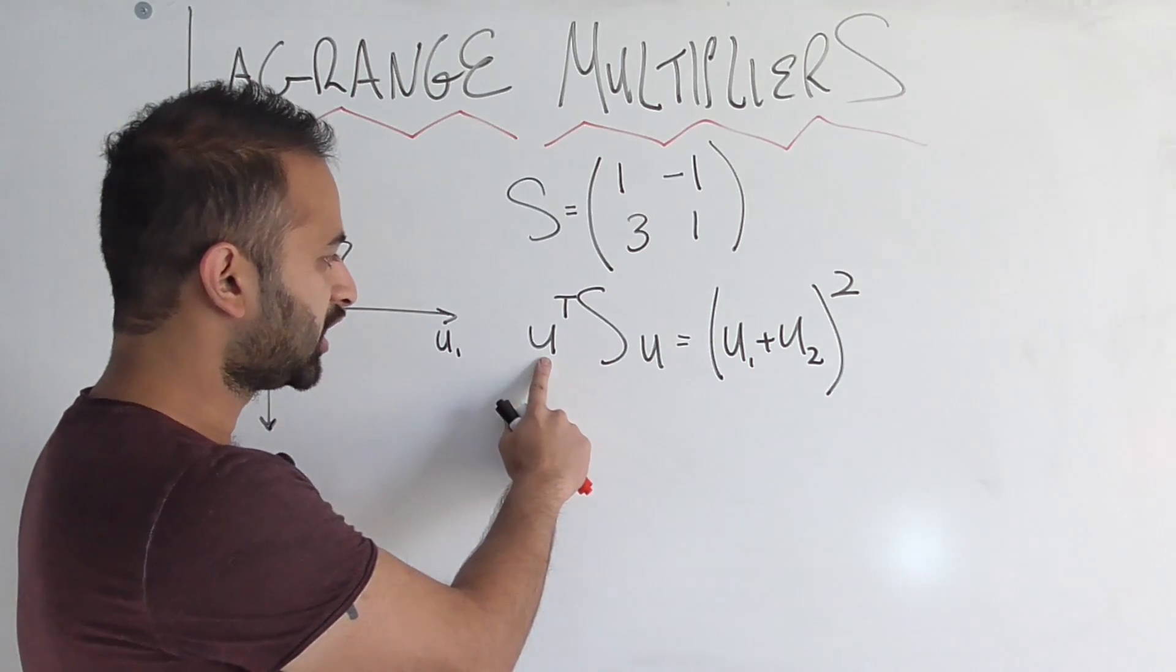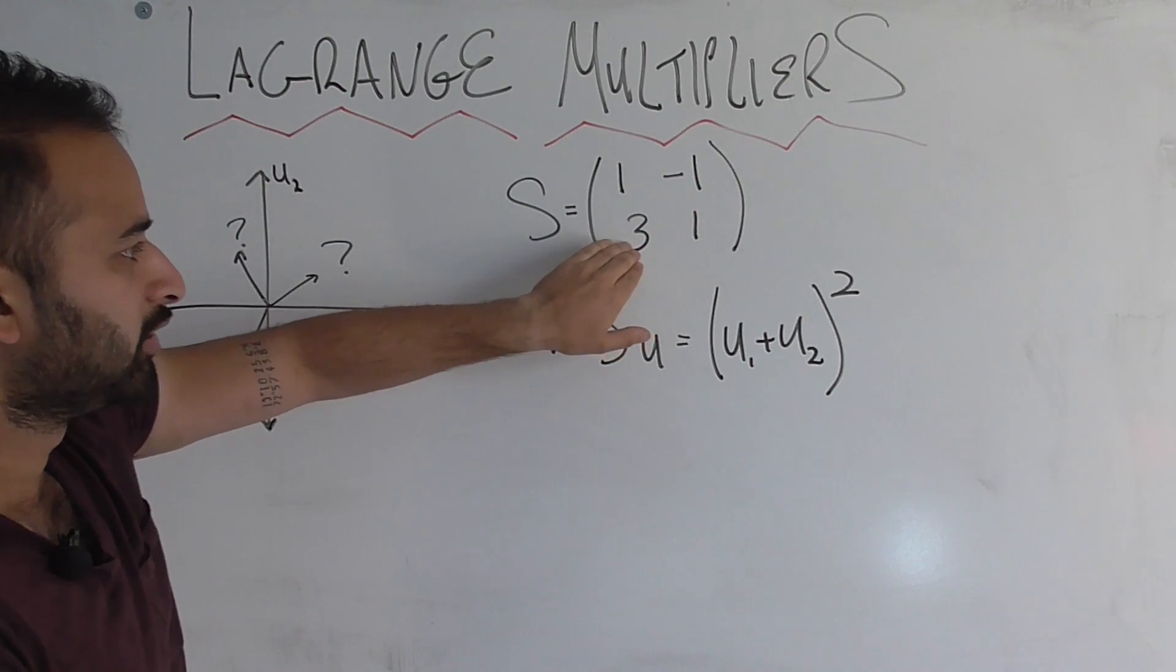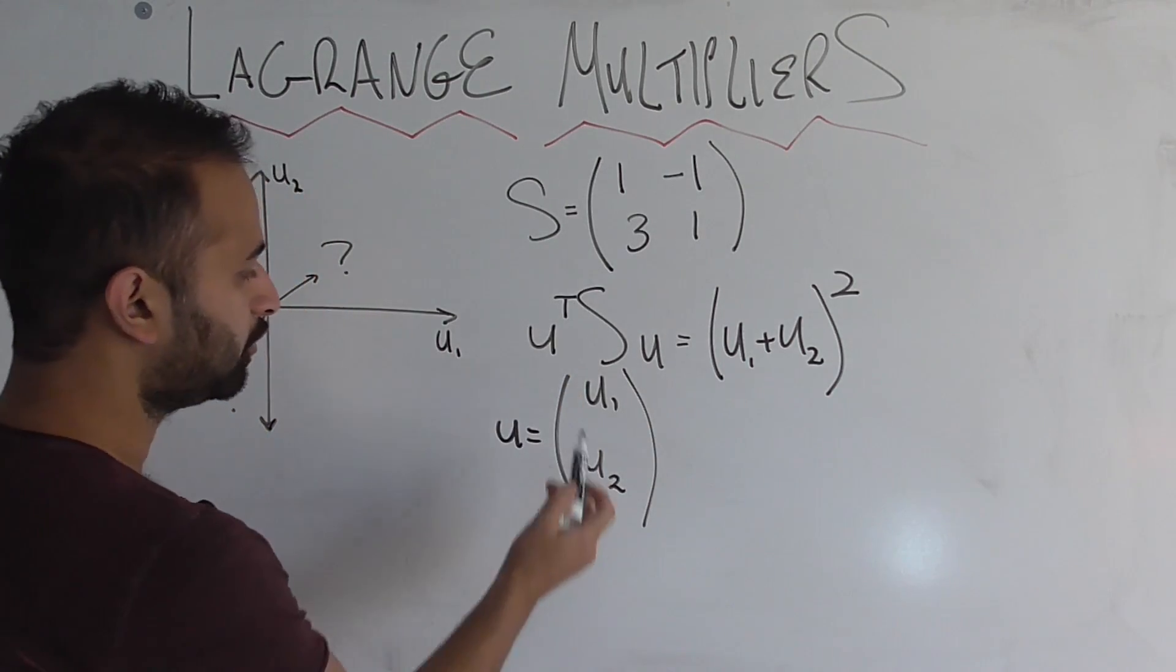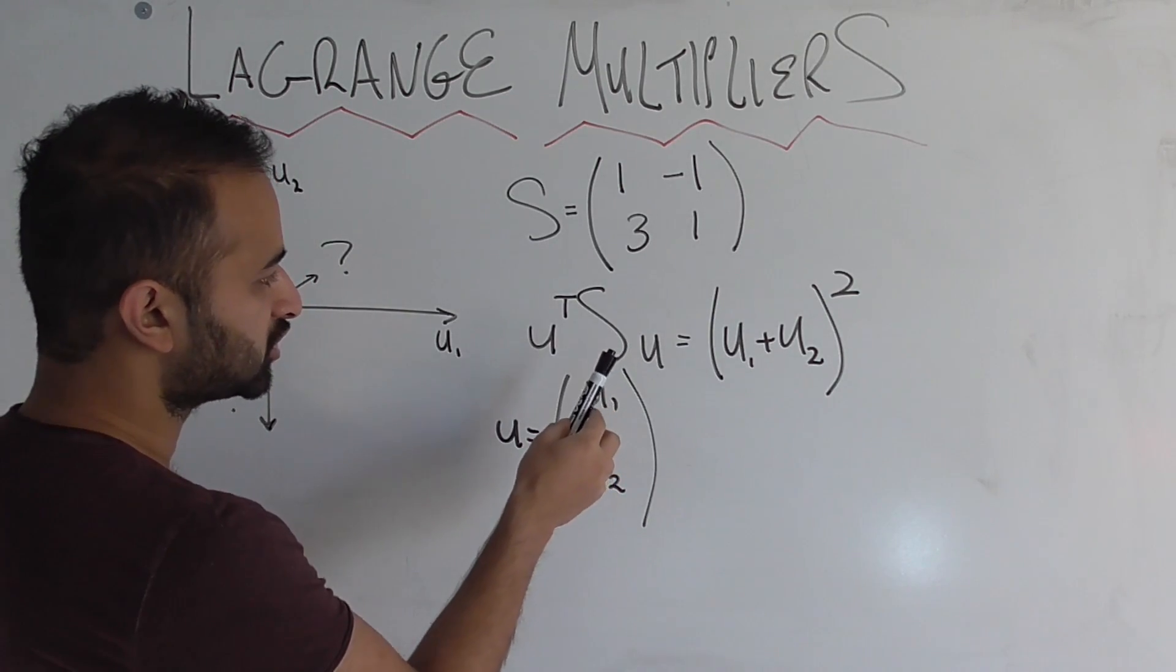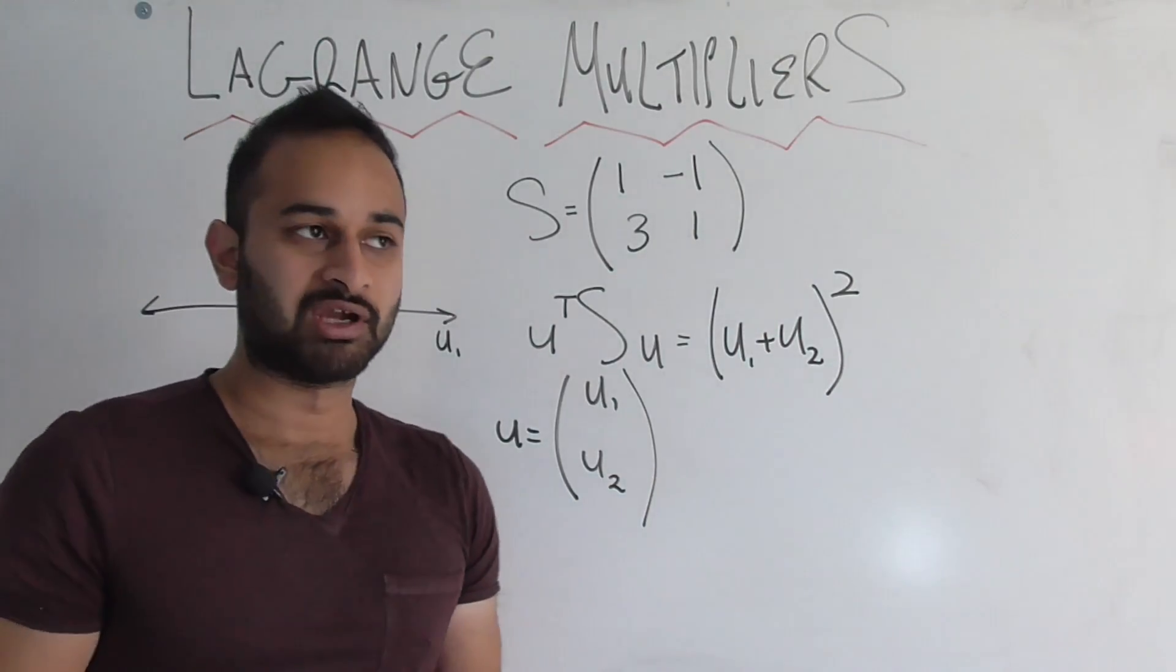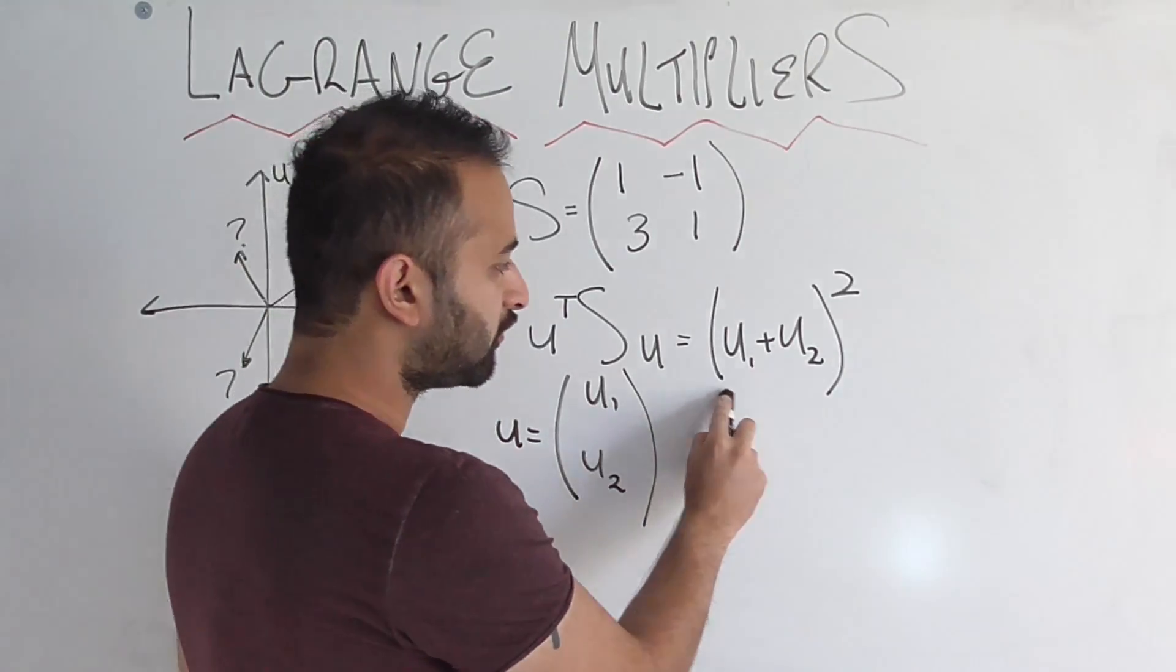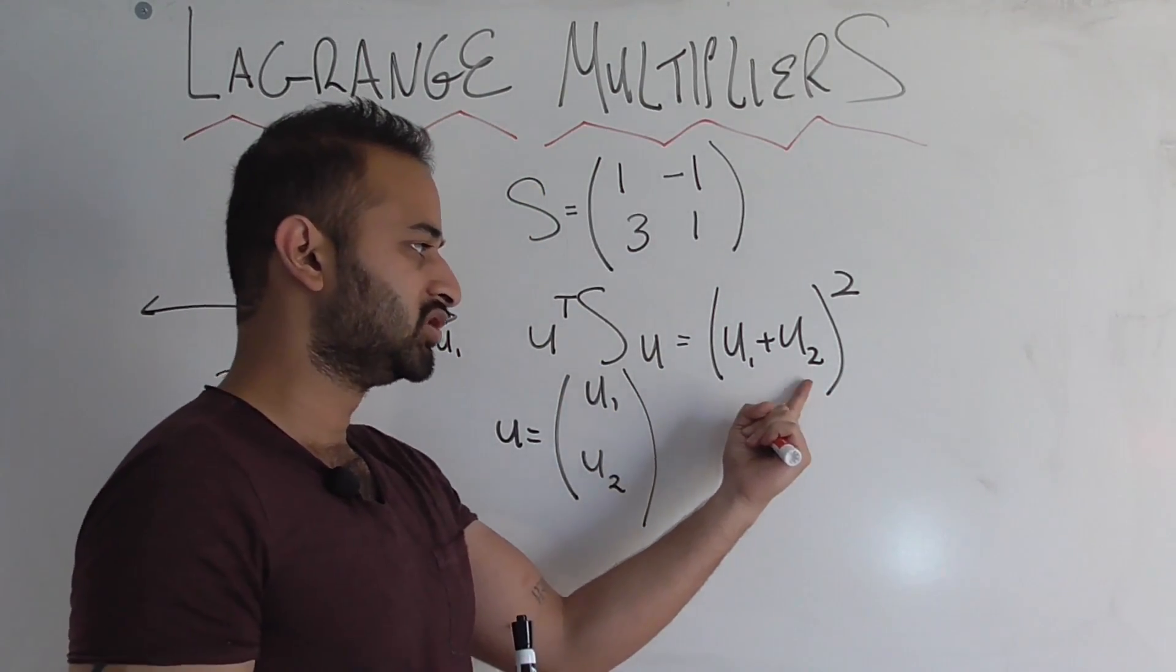The formula is given by U transpose SU, where S is a 2 by 2 matrix, 1, negative 1, 3, 1, and U is simply the direction we're choosing to go in. So, it's a 2 by 1 vector with the U1 and U2 component of the direction we're choosing to go in. Now, I'm not going to go over all the computations which lead us from U transpose SU to what that formula is algebraically, because I think based on the matrix multiplication type operations we've done in past videos, you can do that. But in the end, we find that if we find the closed form algebraic solution after doing all these vector matrix multiplications, it's equal to U1 plus U2 squared.